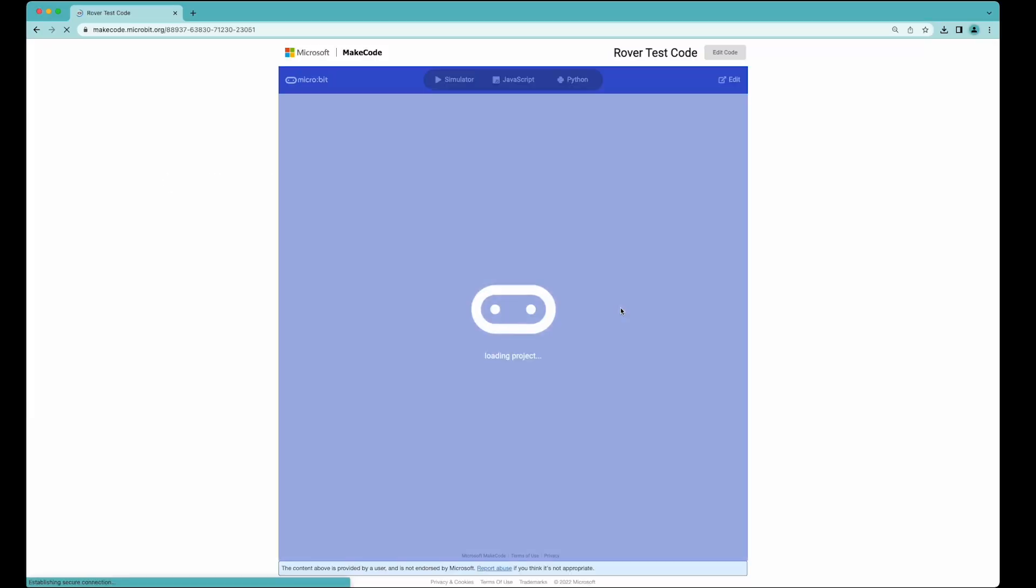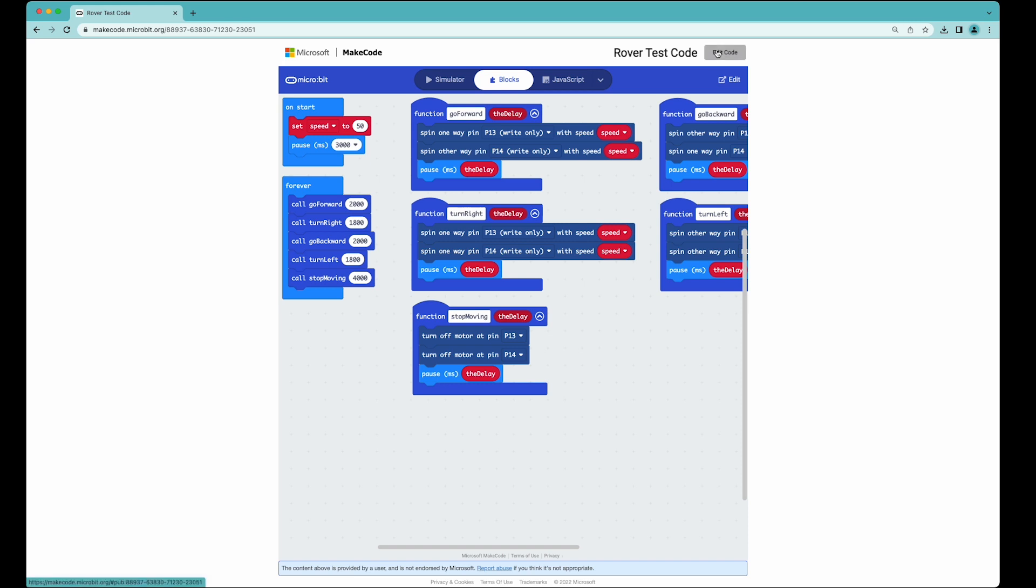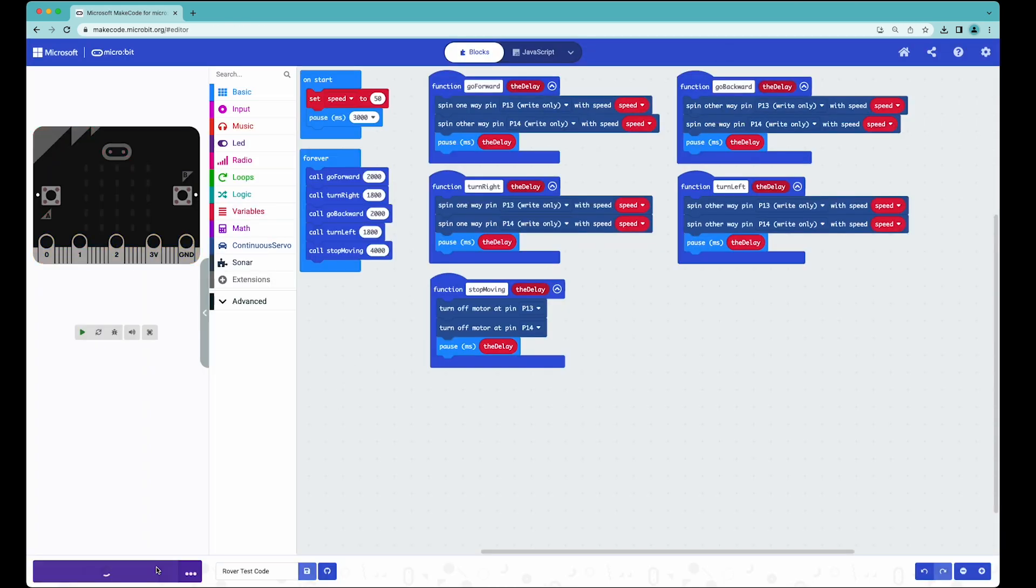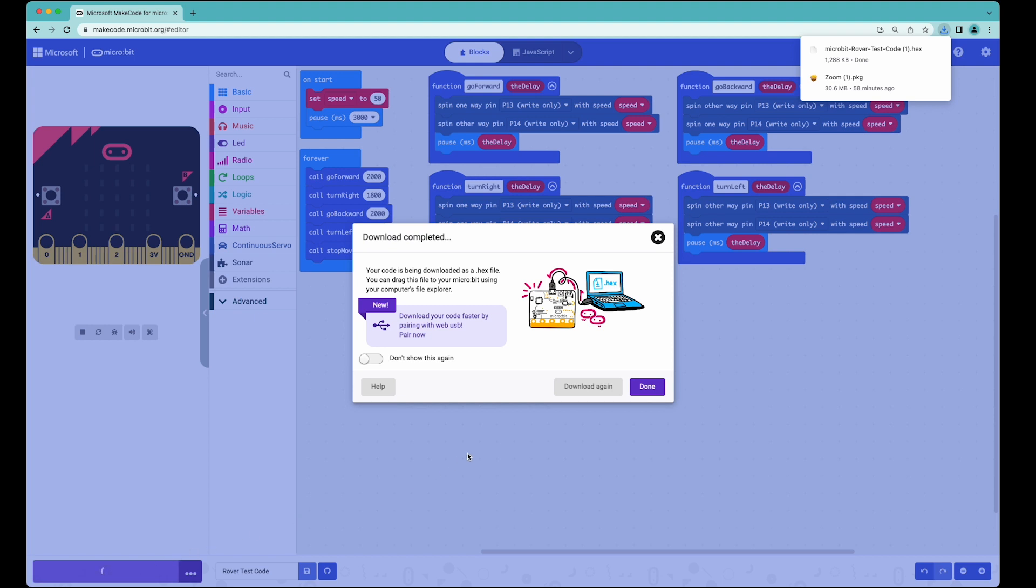Follow the link in our step-by-step tutorial directly to the code. Once you're there, download the code and then copy it to your micro bit.